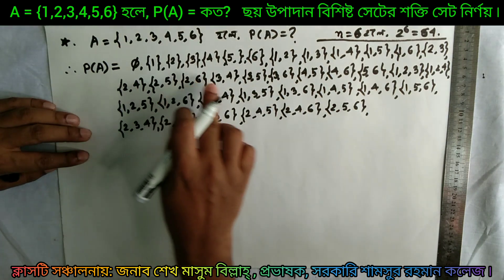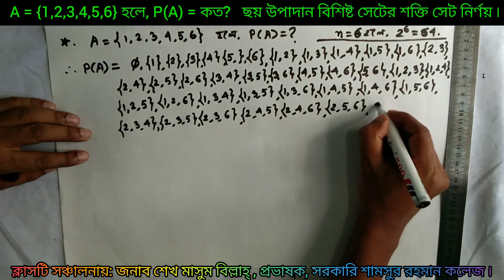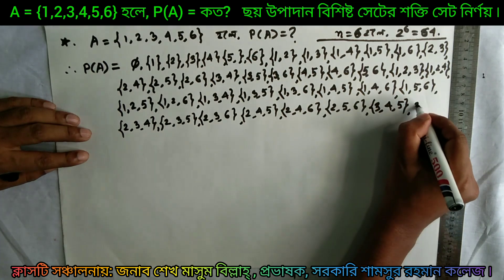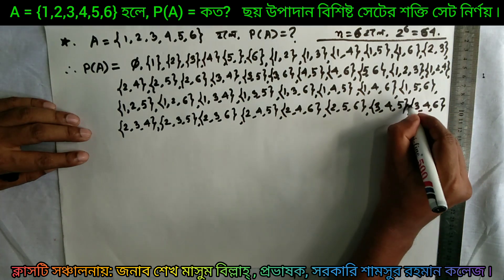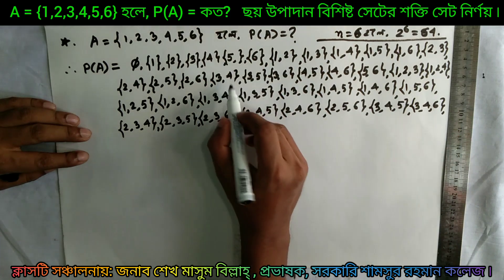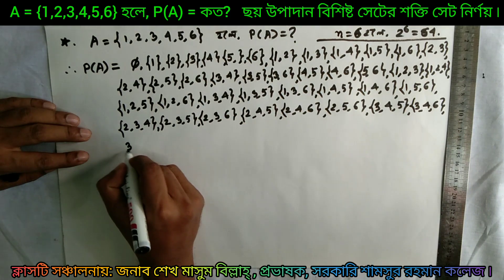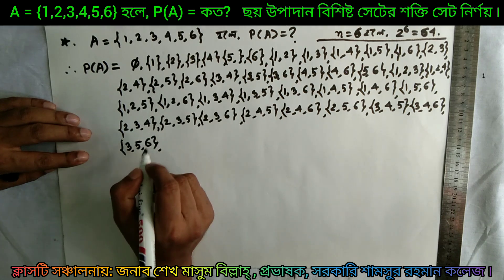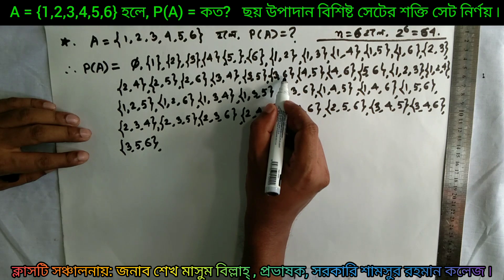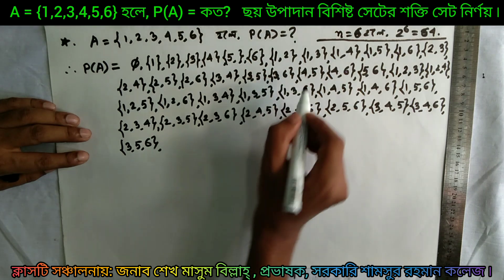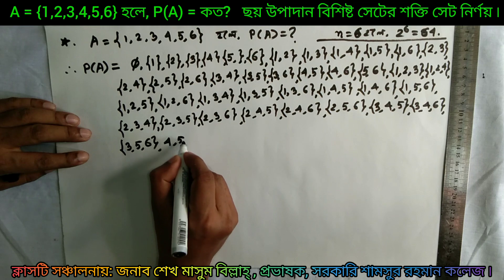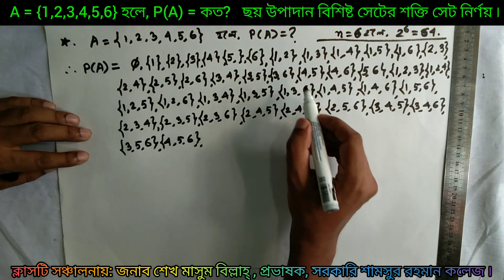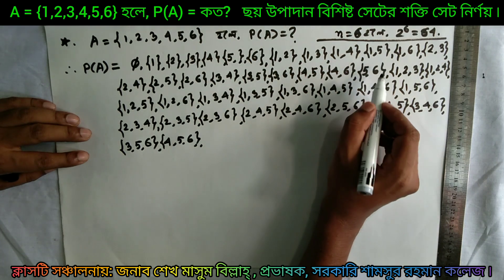Then {3,4}, {3,4,5}, {3,4,6}. Then {3,5,6}, and {3,4,5,6}. Then {3,5,6} and {6} and {6}. We will not continue our 3-element listing here.